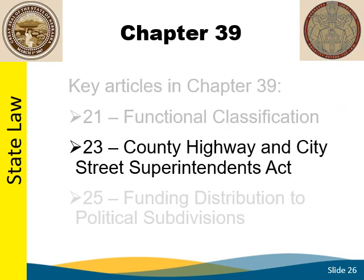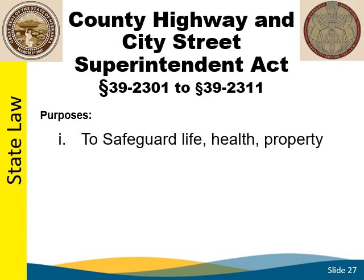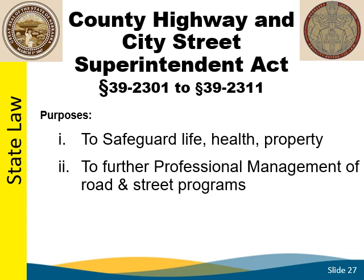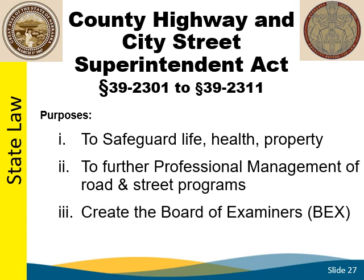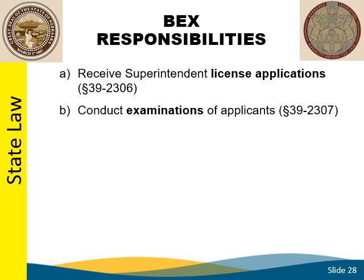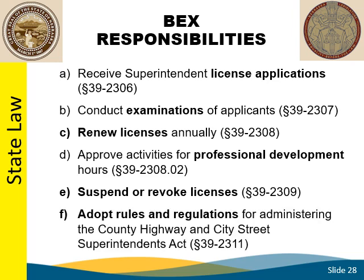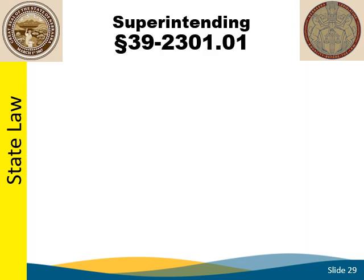The next few screens address some of the more important parts of Article 23. The County Highway and City Street Superintendent Act is covered by Article 23 of Section 39 of the State Statutes. The purposes of this section are to safeguard life, health, and property, to further professional management of road and street programs, create the Board of Examiners for County Highway and City Street Superintendents, and to provide a licensing system for those superintendents. The responsibilities of the Board of Examiners are to receive applications for the superintendent's license, conduct examinations of applicants, renew licenses annually, approve professional development hours, suspend or revoke licenses, and administer, through rules and regulations, the County Highway and City Street Superintendents Act.